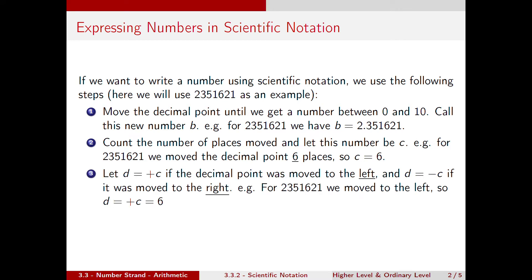Now if the decimal point was moved to the left we allow D to be plus C. If the decimal point is moved to the right we allow D to be minus C. For instance, with a number such as 0.0042, we would move the decimal point to the right until we got 4.2. In that situation C would be 3, and D would be minus 3. For us we moved to the left, which means D is equal to plus C, so it is 6.